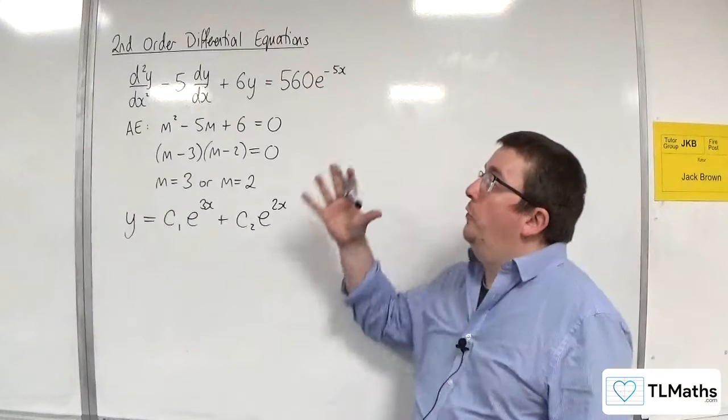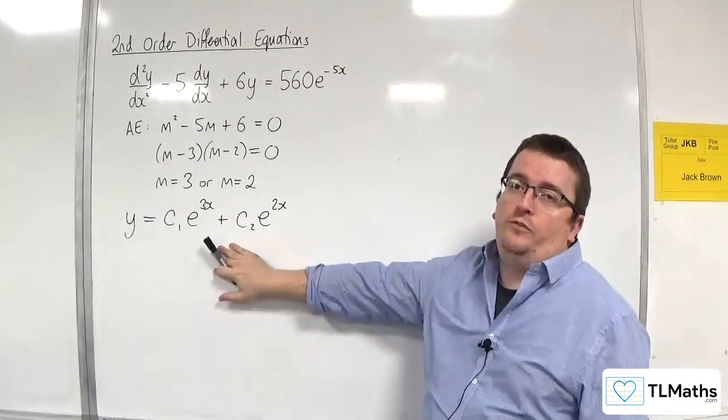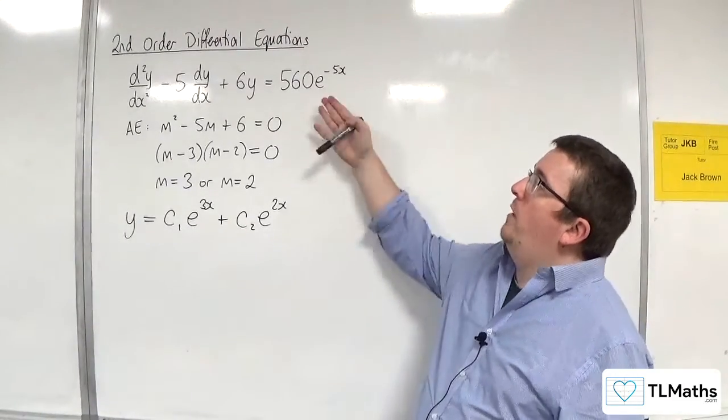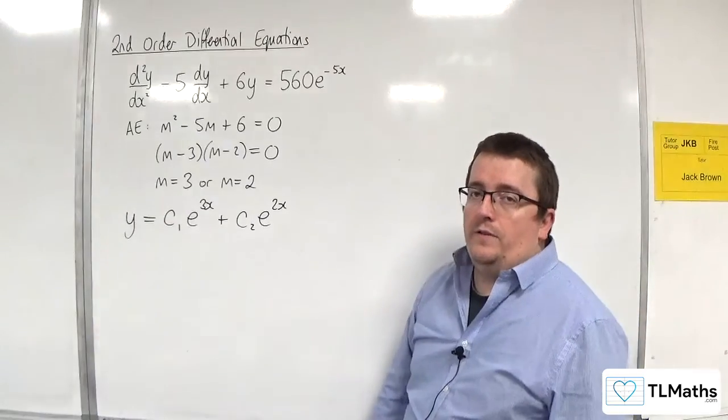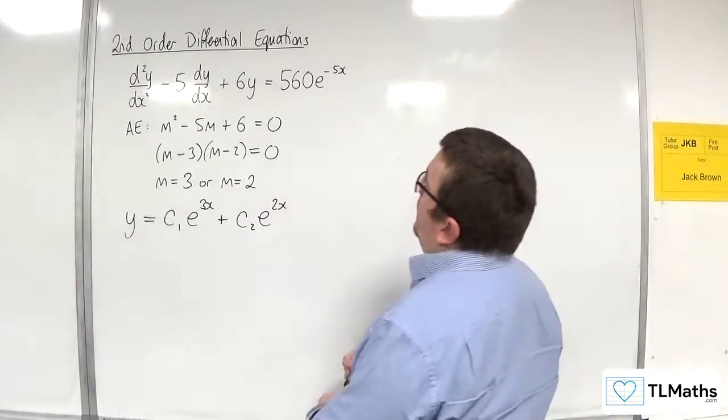So a few videos ago we solved the homogeneous case for this differential equation. We've got our complementary function ready, but now the right-hand side is 560 e to the minus 5x. So what should our test function be in this case?